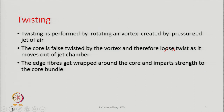If false twist is generated in the core part of the yarn and the core is losing that twist, the fibers become parallel again — meaning the yarn will not have any strength at all. Therefore, there has to be some kind of wrapping twist on the core part of the yarn by some other fibers.